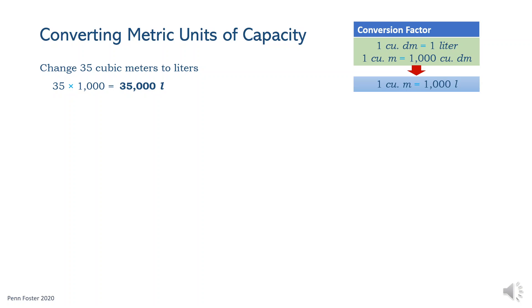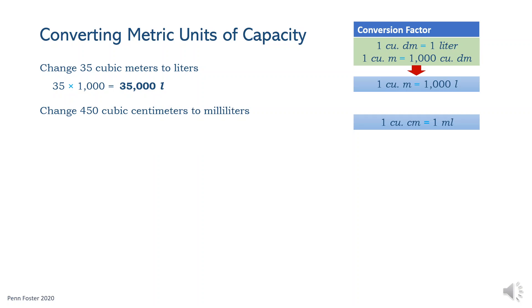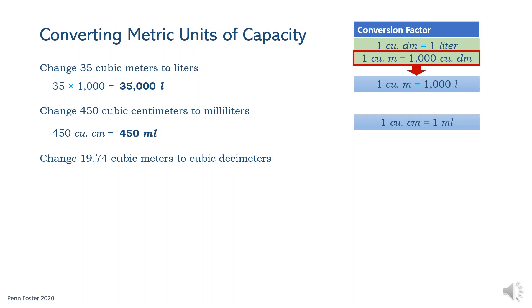Another relation that connects both metric systems is 1 cubic centimeter equals 1 milliliter. So 450 cubic centimeters is the same volume as 450 milliliters. In the next problem, one cubic meter has 1,000 cubic decimeters. So to convert 19.74 cubic meters to cubic decimeters, multiply the volume times 1,000. The answer is 19,740 cubic decimeters.